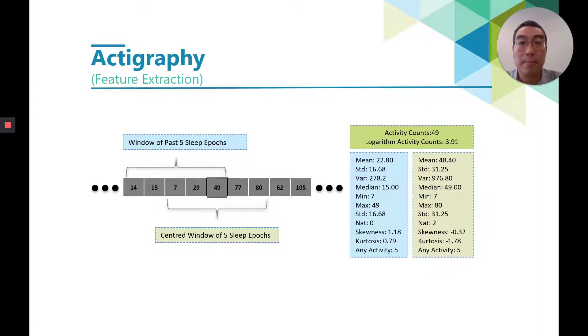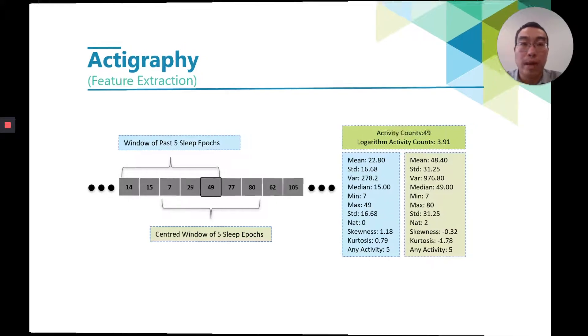Here are examples of extracting the Actigraph data features. We were using two different methods of selecting window with stride length equal to 1 to extract the statistic features. For each sleep epoch, we extracted 370 features from the activity counts. Here we show you an example of window length equal to 5.